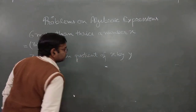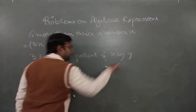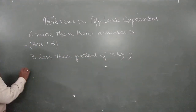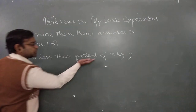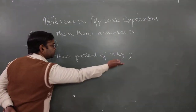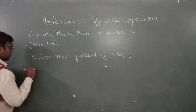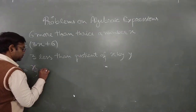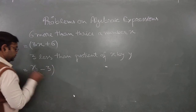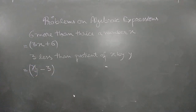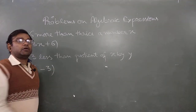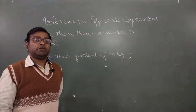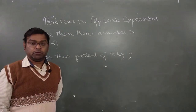For the quotient of x by y: quotient means we divide, so it's x divided by y, written as x/y. Three less means we subtract 3, giving x/y minus 3. Complete all the expressions and statements given in your book, then move to the next part.